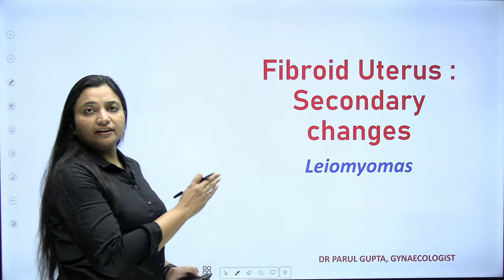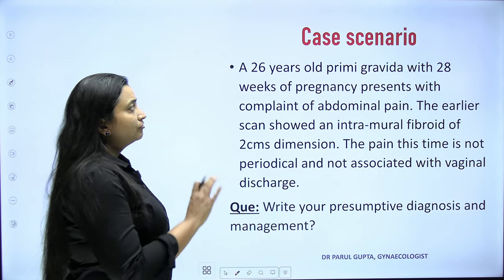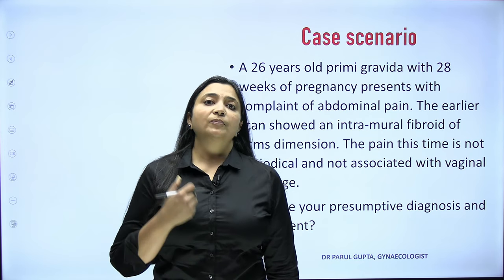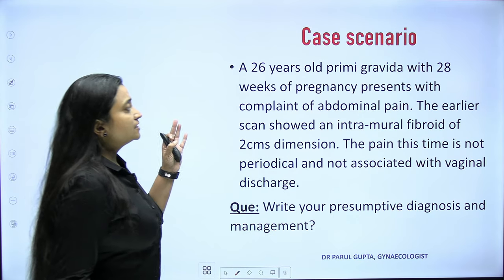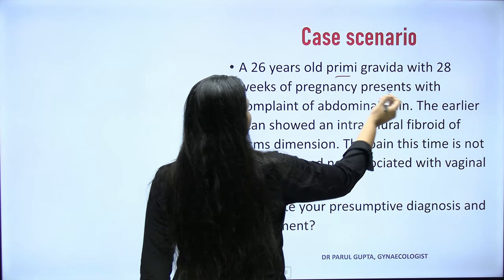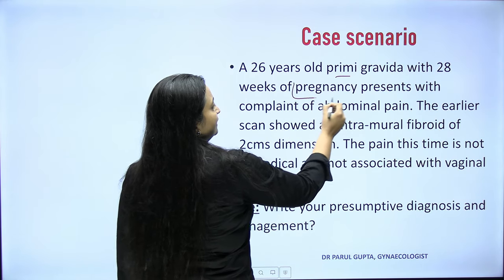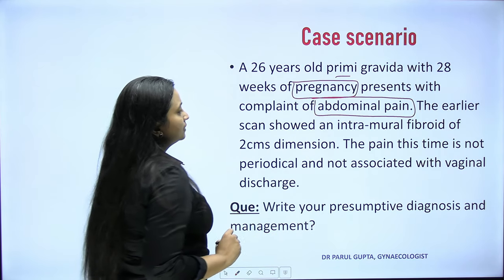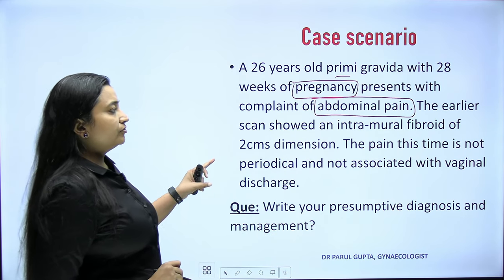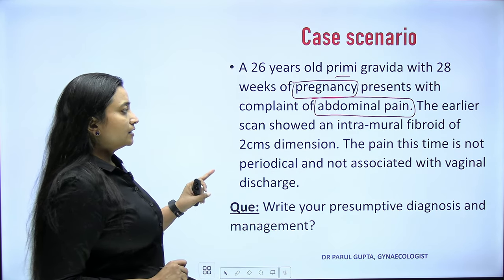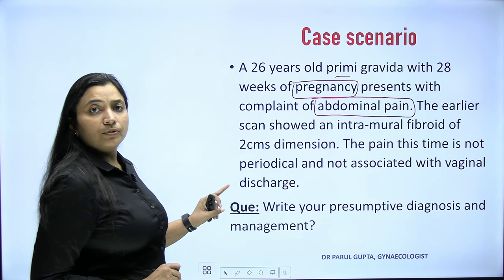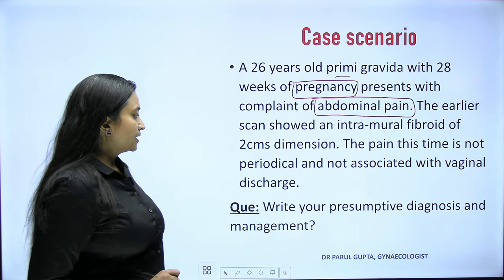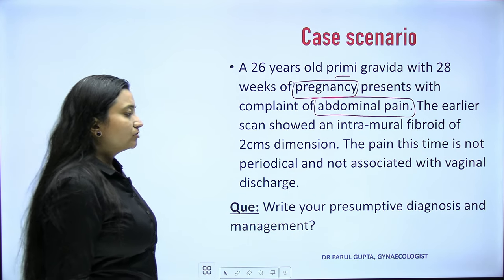We will be discussing secondary changes. First, a case scenario — how you will be getting cases and questions. A 26-year-old primigravida with 28 weeks of pregnancy presents with complaints of abdominal pain. The earlier scan showed an intramural fibroid of 2 centimeters. The pain this time is not periodical and not associated with vaginal discharge. Write your presumptive diagnosis and management.